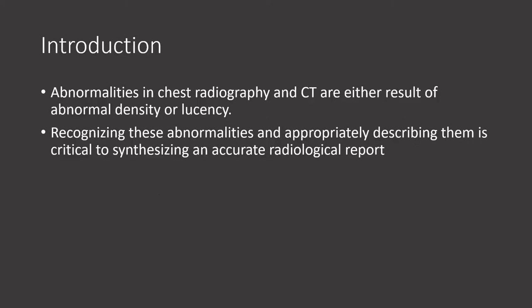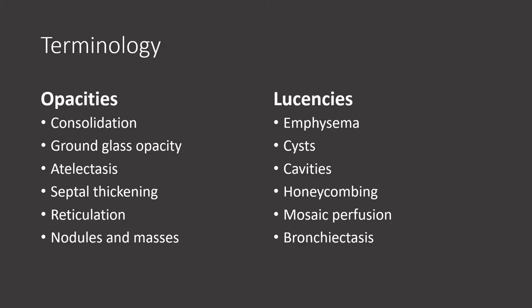Disease processes that we can see on chest x-ray and CT are either the result of too much density or too much lucency. Using accurate descriptors when we find these abnormalities is crucial so that we can synthesize a clear differential diagnosis. Here are some commonly seen opacities and lucencies that we can note on chest x-ray and CT.